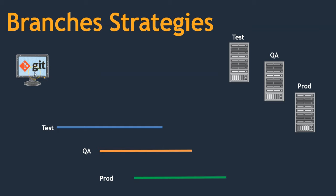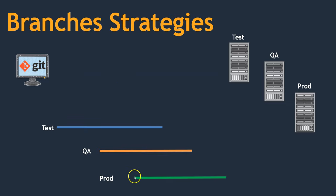Let's assume I am developing one application. Some piece of code is ready and I have tested it on my local system — nothing but on my laptop — it is working fine. But I don't have any confidence or guarantee that it is going to work on production as well.